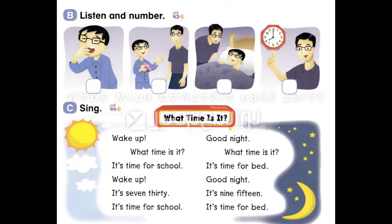Page 63, Section C — Sing. What time is it? Wake up! It's 7:30, it's time for school. Wake up, what time is it? It's time for school. Wake up, it's 7:30, it's time for school. Good night, what time is it? It's time for bed. Good night, it's 9:15, it's time for bed.